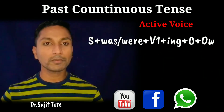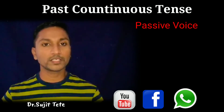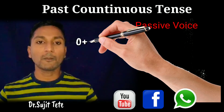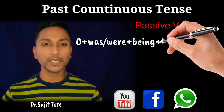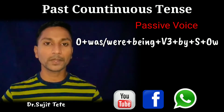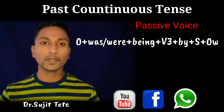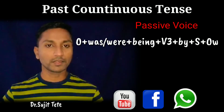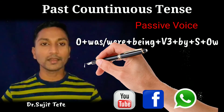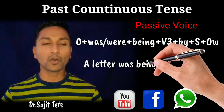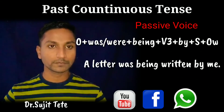To convert that into passive, the passive structure is: object plus was or were plus being plus V3 plus by plus subject plus other words. The example is: a letter was being written by me.